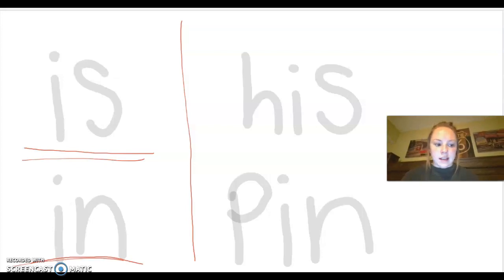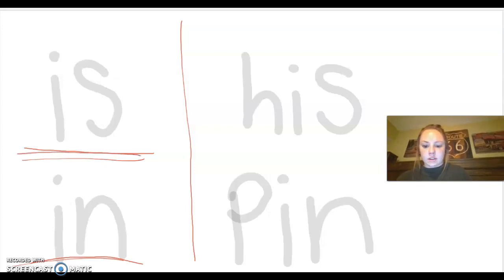Let's look over on the right side now. Think for a second if you know these words. If you don't know these words, I'm going to show you a strategy that you can use to help figure them out. All right, so we know I, S says is, so let's underline is. And we know H says huh.